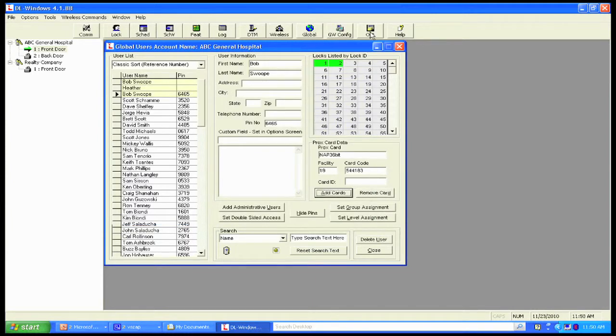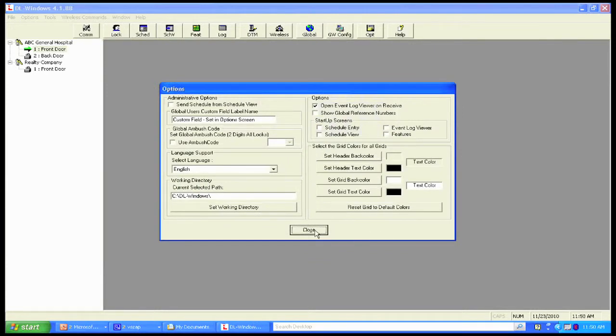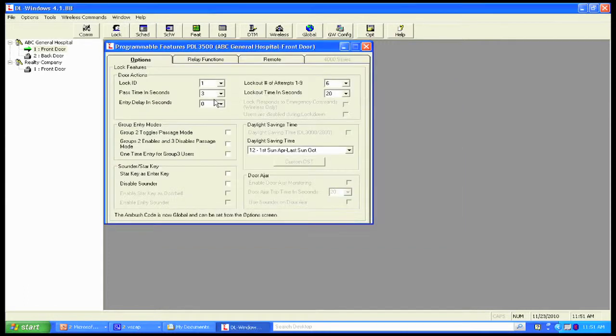The Options Screen is right here. This is just where you can set different types of options. We can set the screens from the Custom Field. We can use an Ambush Code. Ambush Code simply means that if I hit two digits prior to my code, I'm going to get a silent alarm if I've wired that. In the Options Screen, the three tabs pretty much show you in the standalone series what options and screens are available.